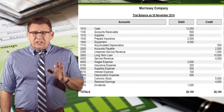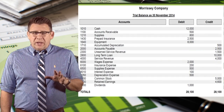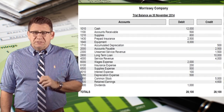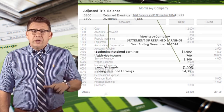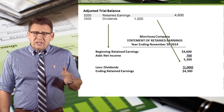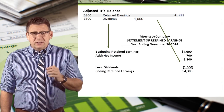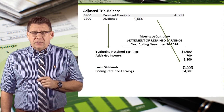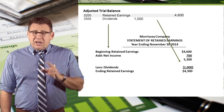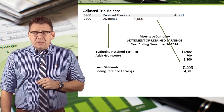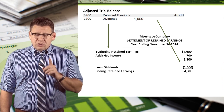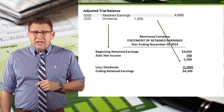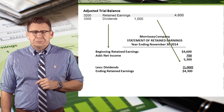So let's use the adjusted trial balance and complete the financial statements. We use retained earnings and dividends from the trial balance and put that on the statement of retained earnings. Additionally, we will use net income from the income statement.